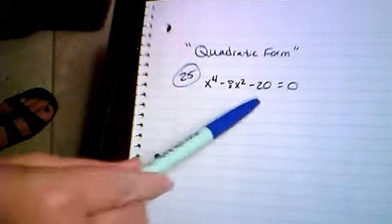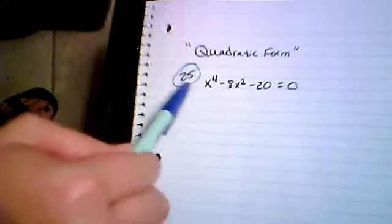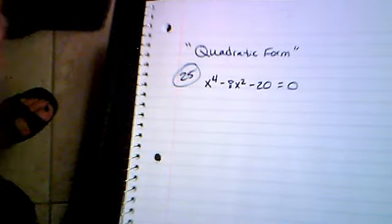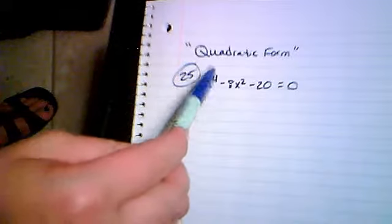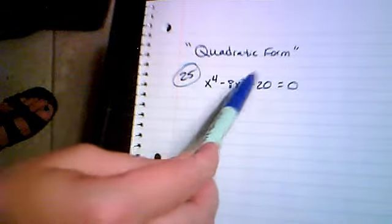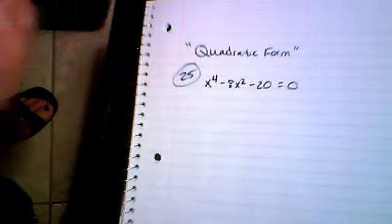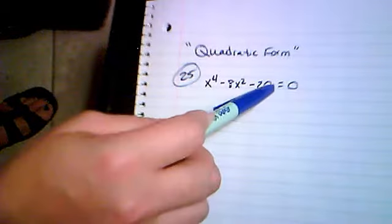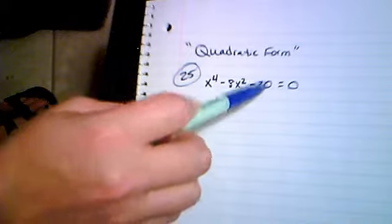Also notice how this is a constant term, which means we can't factor something out. Sometimes we've been given something where we have something that's quartic and something that's cubic and then something that's quadratic, and then we can factor out x squared. But we can't do that here because there's no x's to factor out of this one.